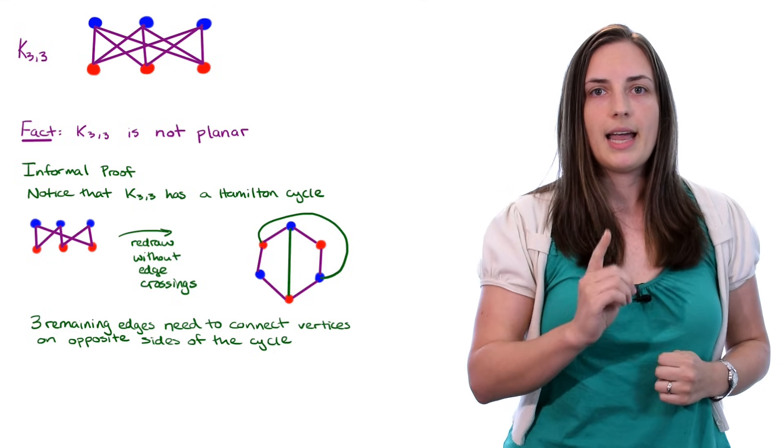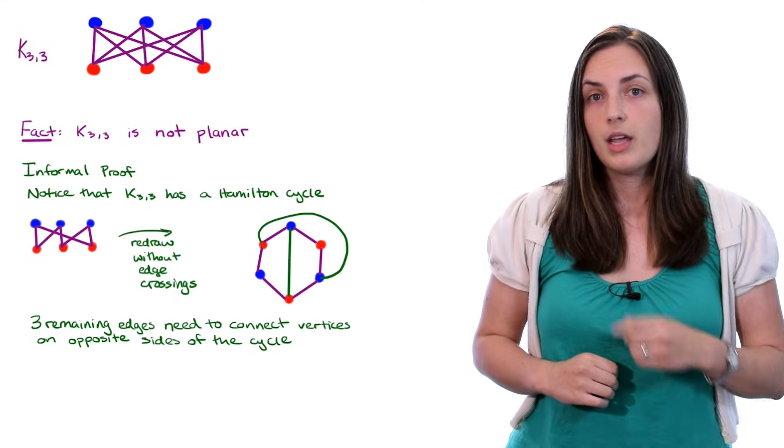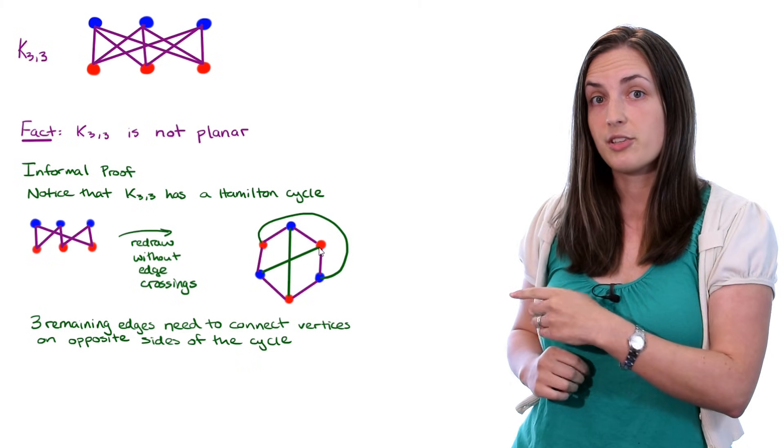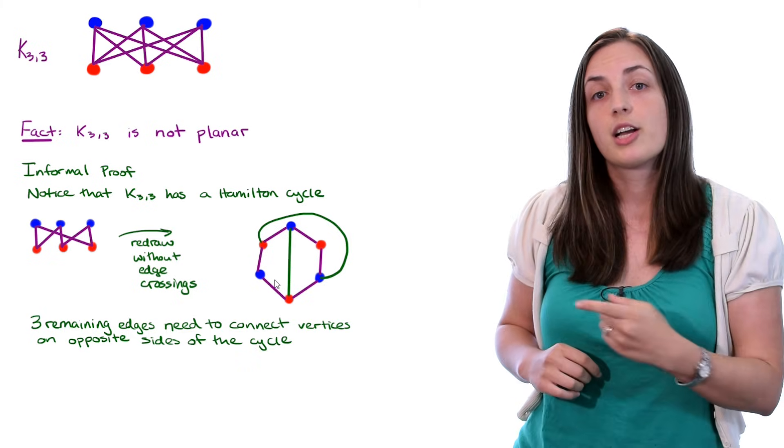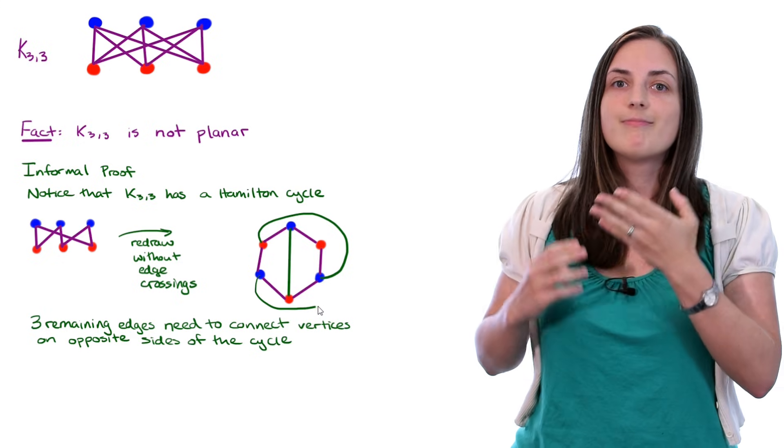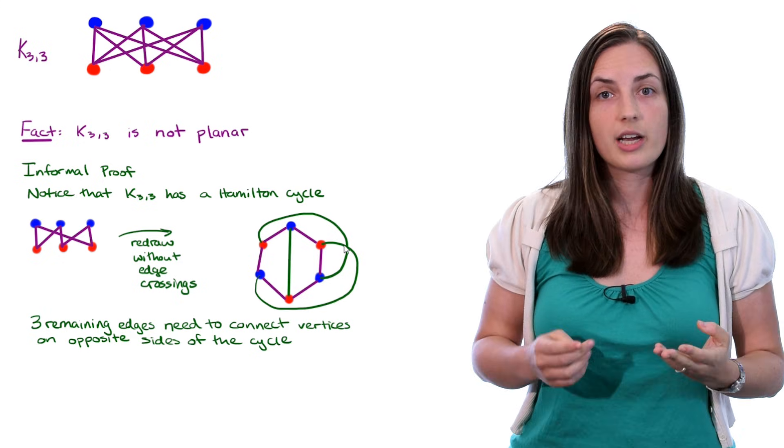But we have one remaining edge. Let's see what we can do with it. If we try to go across the middle of the Hamilton cycle, we get stuck. We hit the other one. So we can't do that. If we try to go around the outside of the Hamilton cycle, we again hit an edge. So we're going to get stuck.